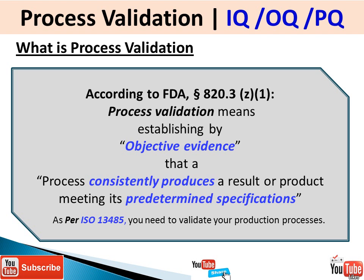Let me break this definition down to the component level. Objective evidence is a documented collection of facts, data, and statistical analysis that serves as a basis for concluding that your process is operating in a validated state. The meaning of 'consistently produces' goes back to the idea of process capability and process stability — if you can achieve both, you are able to consistently produce good parts.